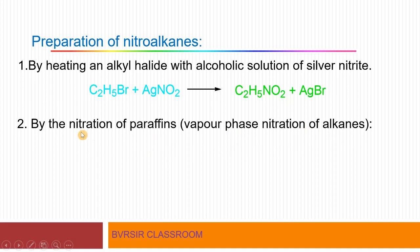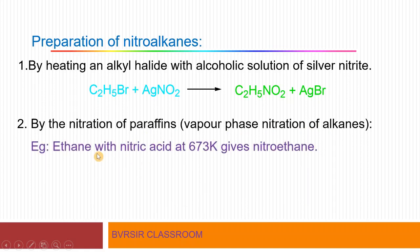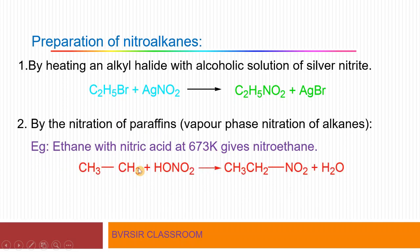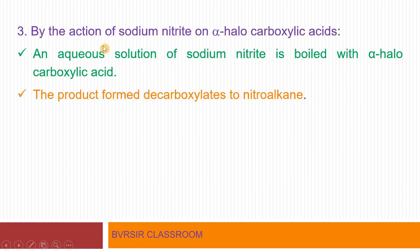Another method is the vapor phase nitration of alkanes at elevated temperature, also called nitration of paraffins. For example, ethane reacted with nitric acid (HNO3) at 673 K gives nitroethane (CH3CH2NO2). So this reaction is called vapor phase nitration of alkanes or nitration of paraffins.